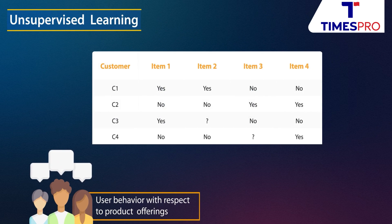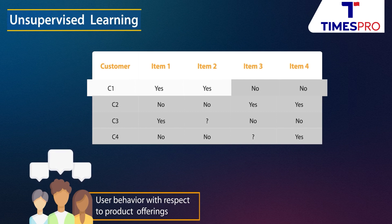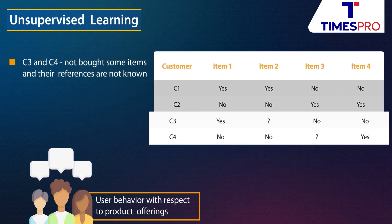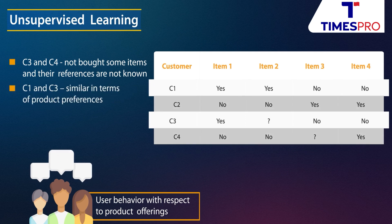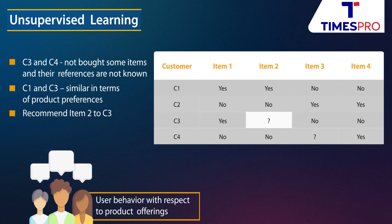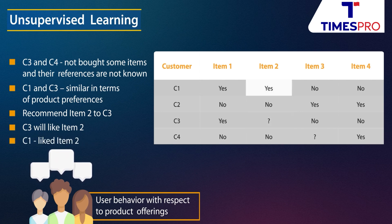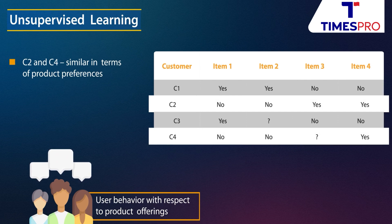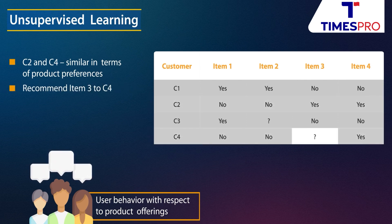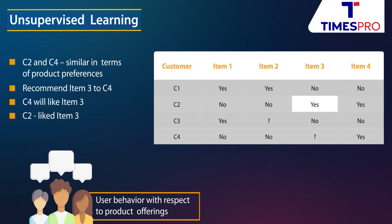Let's look at customer behavior with respect to product offerings. Customer C1 prefers to buy items 1 and 2, and not items 3 and 4. Customers C3 and C4 have not bought some items and their preferences are unknown. Closely observing the data set, C1 and C3 are similar in terms of product preferences. Hence we can recommend item 2 to customer C3, assuming customer C3 is most likely to like item 2 because C1 liked and purchased it. Similarly, C2 and C4 have similar product preferences, so we can recommend item 3 to customer C4, since customer C2 liked item 3.